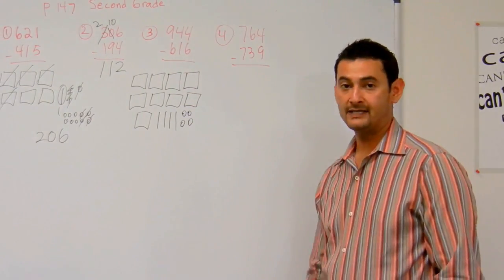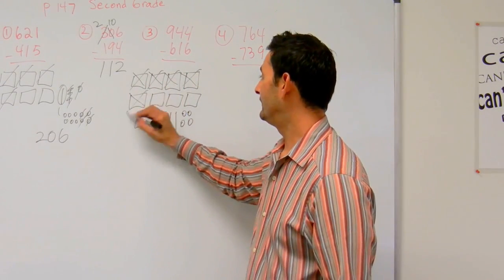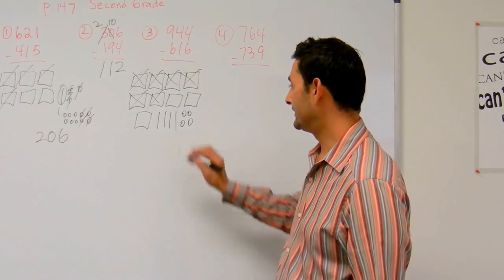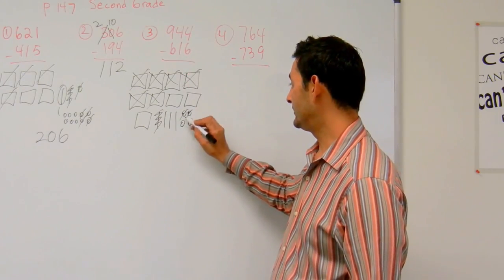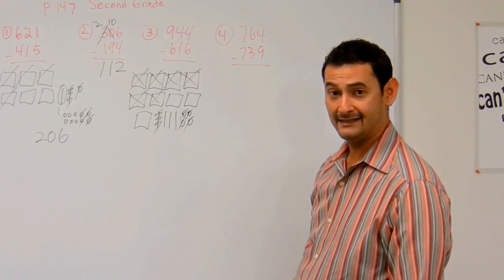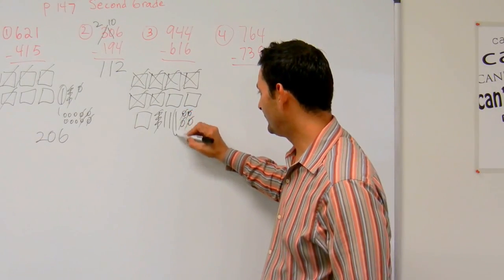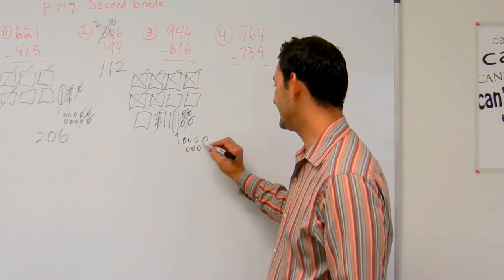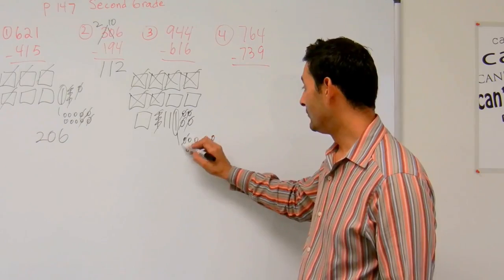Now I'm going to take away 616. I'll take away 6 hundreds, then 1 bundle of 10, then 6 ones. Take away 1, 2, 3, 4. Oh my goodness, I still need to take away 2 more! So I'm going to borrow from this bundle of 10 right there and take away 2 more.